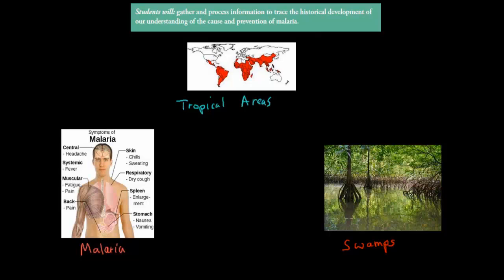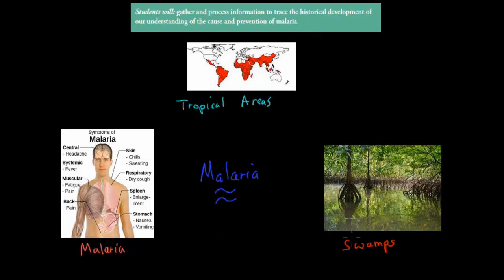Malaria is actually one of the biggest killers for human beings, and has been for a long time. We've often wondered why exactly malaria is around and what causes it. For many years we believed that swamps — the bad air in swamps — causes malaria. So the bad air was kind of one of our theories.